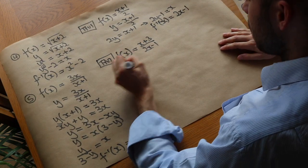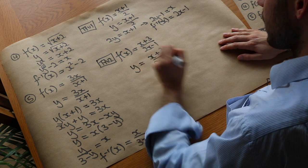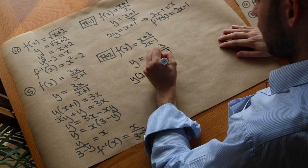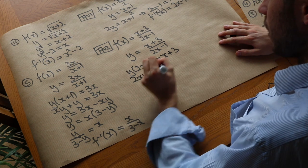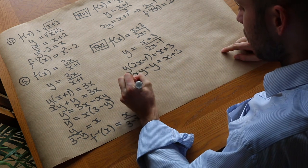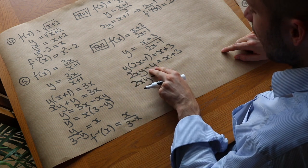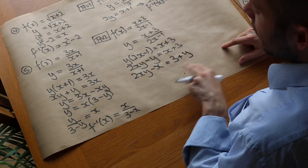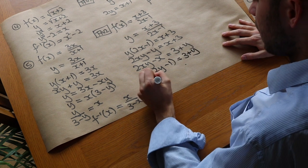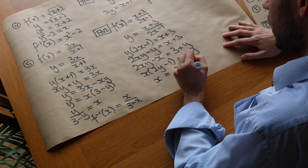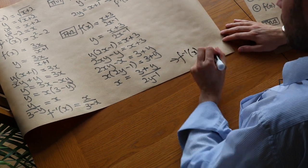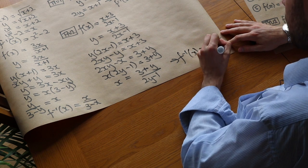Second test question, a bit harder: f(x) = (x + 3)/(2x − 1). Write y = (x + 3)/(2x − 1). Multiply both sides by (2x − 1): y(2x − 1) = x + 3. Expand: 2xy − y = x + 3. Isolate x terms — subtract x and add y: 2xy − x = 3 + y. Factorise out x: x(2y − 1) = 3 + y. Divide by (2y − 1): x = (3 + y)/(2y − 1). So f⁻¹(x) = (3 + x)/(2x − 1). Well done if you got that.